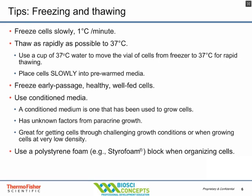I also recommend using conditioned media. Conditioned media is media that's been used to grow cells but not enough so that all the nutritional value is removed. Every cell type will secrete unknown factors into the media which other cells benefit from — this is the paracrine growth scenario. I make conditioned media by placing fresh media in a flask with maybe 20 to 30 percent confluent cells, let the cells grow overnight, then remove that media the next morning. I centrifuge to remove cell debris and freeze it back for long-term storage. Once thawed, I add 50 percent fresh and 50 percent conditioned media to my culture.